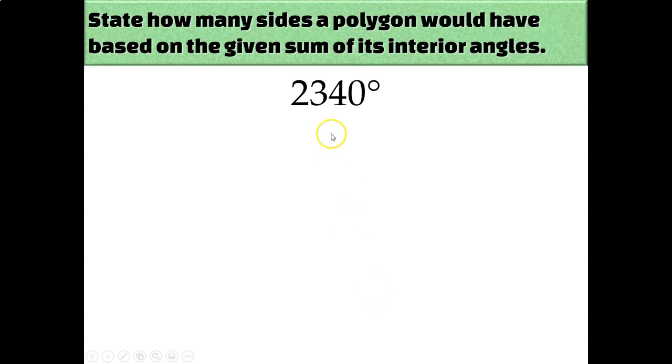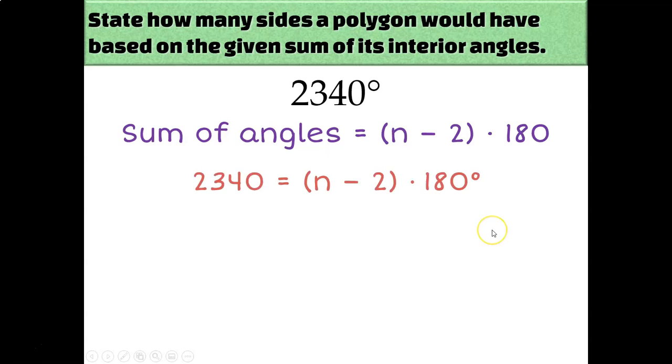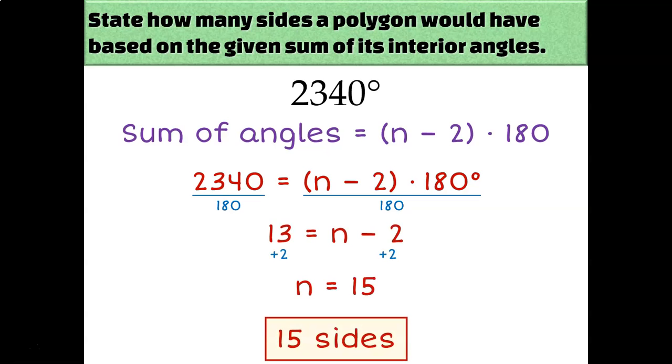Let's try it again. So I'll use that same formula. Sum of the angles equals n minus two times 180. In other words, 2340 equals n minus two times 180. Divide both sides by 180 and add two. So this must be a 15-sided figure.